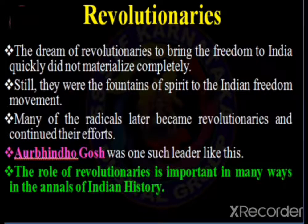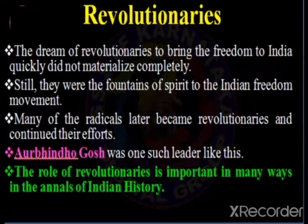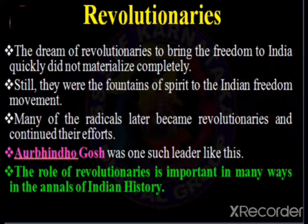The dream of revolutionaries to bring freedom to India quickly did not materialize completely. Still, they were the fountains of spirit for the Indian freedom movement. Many of the radicals later became revolutionaries and continued their efforts — for example, Aurobindo Ghosh began in the radicals' camp and later turned into a revolutionary. The role of revolutionaries is important in many ways in the annals of Indian history, and we can see the role of martyrs, radicals, and revolutionaries who sacrificed their lives to get freedom for our country.